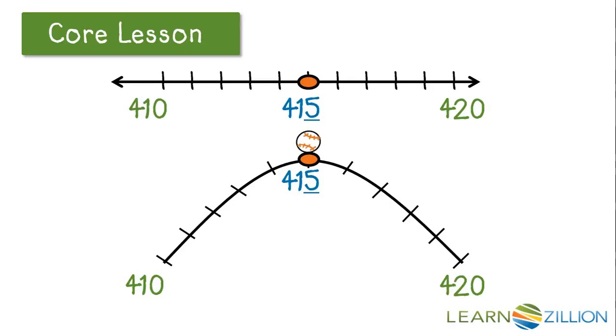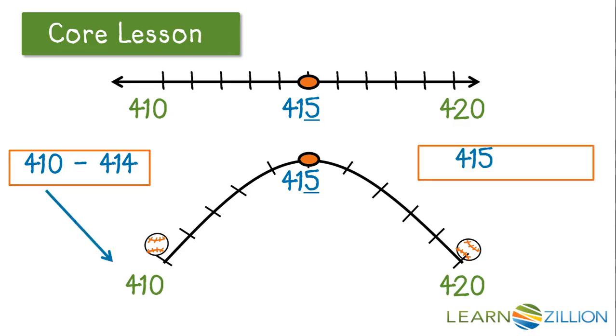We'll use a baseball to show that numbers that are at or above the midpoint will round up. And numbers that are below the midpoint will round down. Numbers between 410 to 414 will round down to 410. 415 to 420 will round up to 420.